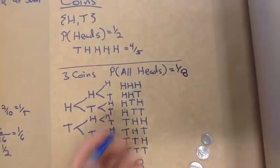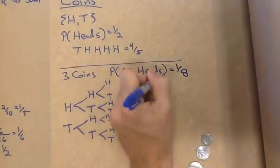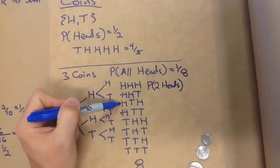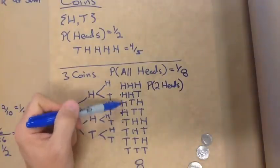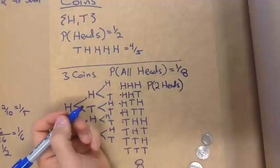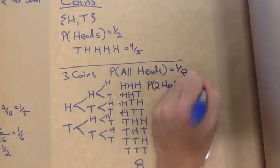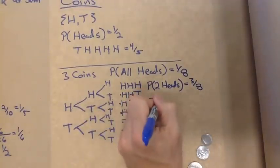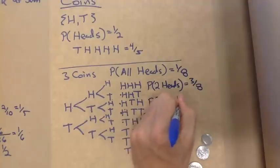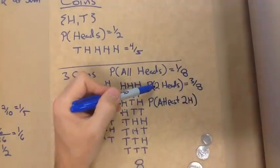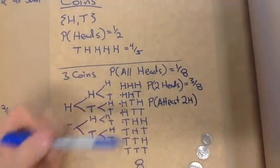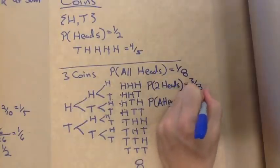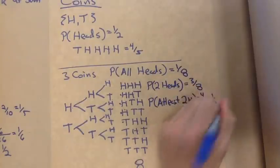What if we wanted the probability of getting exactly two heads? Looking at the sample space, there are three cases where I would get two heads, so that would be three out of eight. Maybe we want the probability of at least two heads — that's the two-heads cases plus the three-heads case: one, two, three, four different options, so that would be a one-half probability.